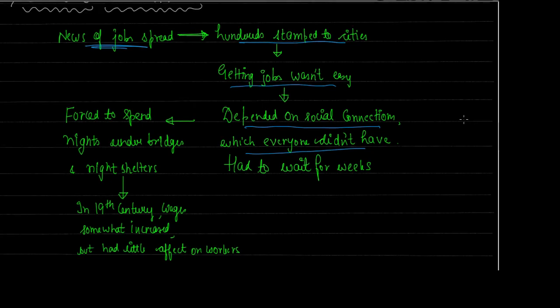Because the number of workers was very large, competition increased enormously. If someone had social connections — like a known person working in a factory — getting a job was easier. But not everyone had social connections, and many had to wait for weeks to get a job. During this unemployment period, they had to spend nights in very pitiful conditions — under bridges and in night shelters. Children, women, and men all had to suffer. There was so much chaos and competition, even children competed.